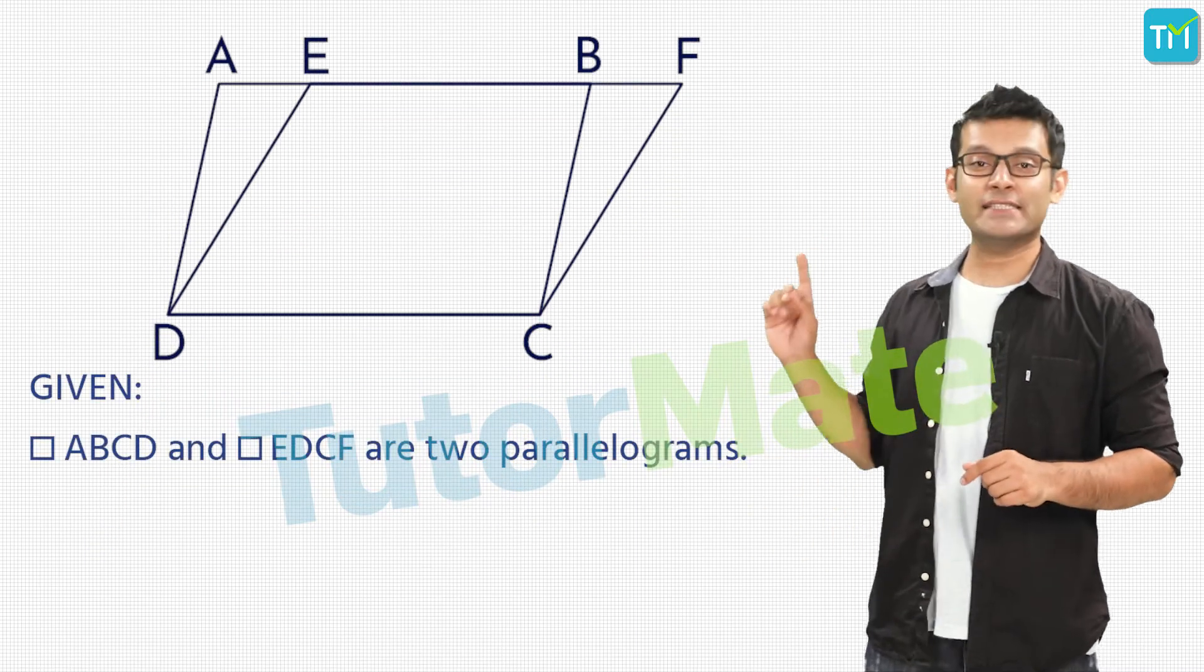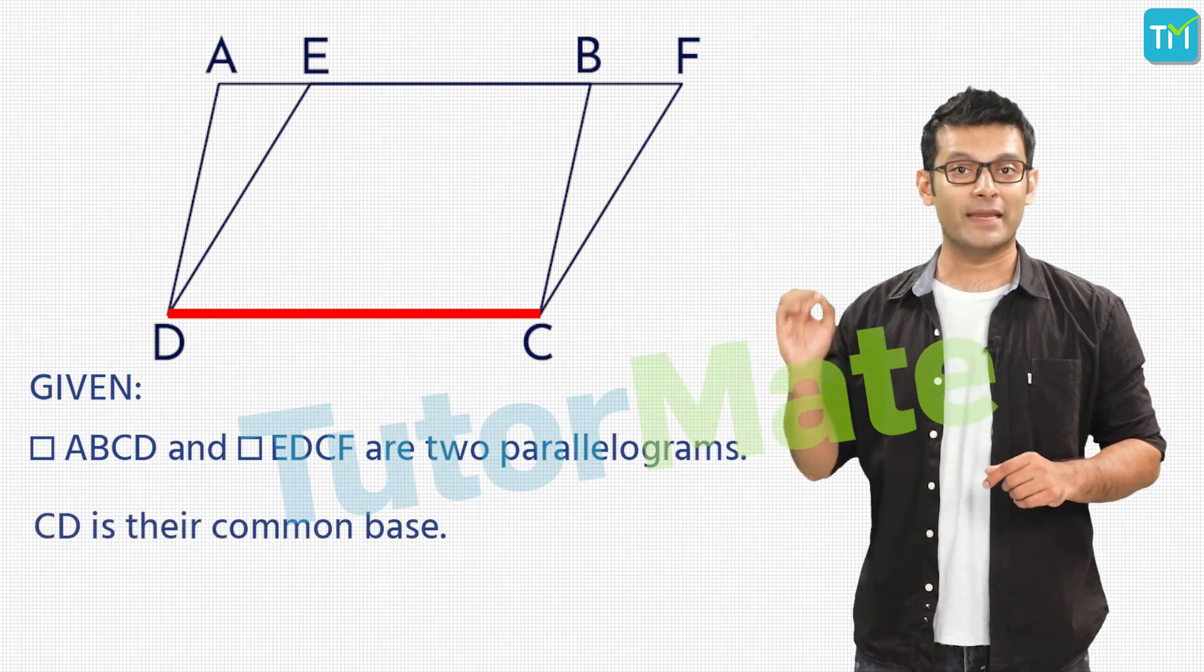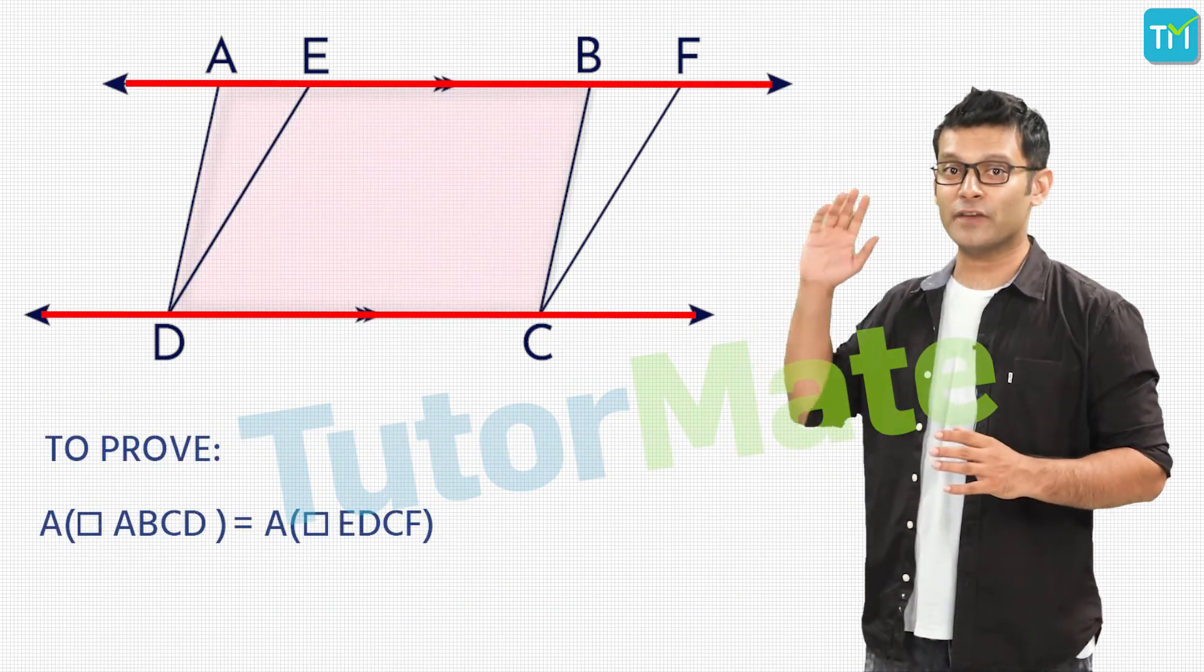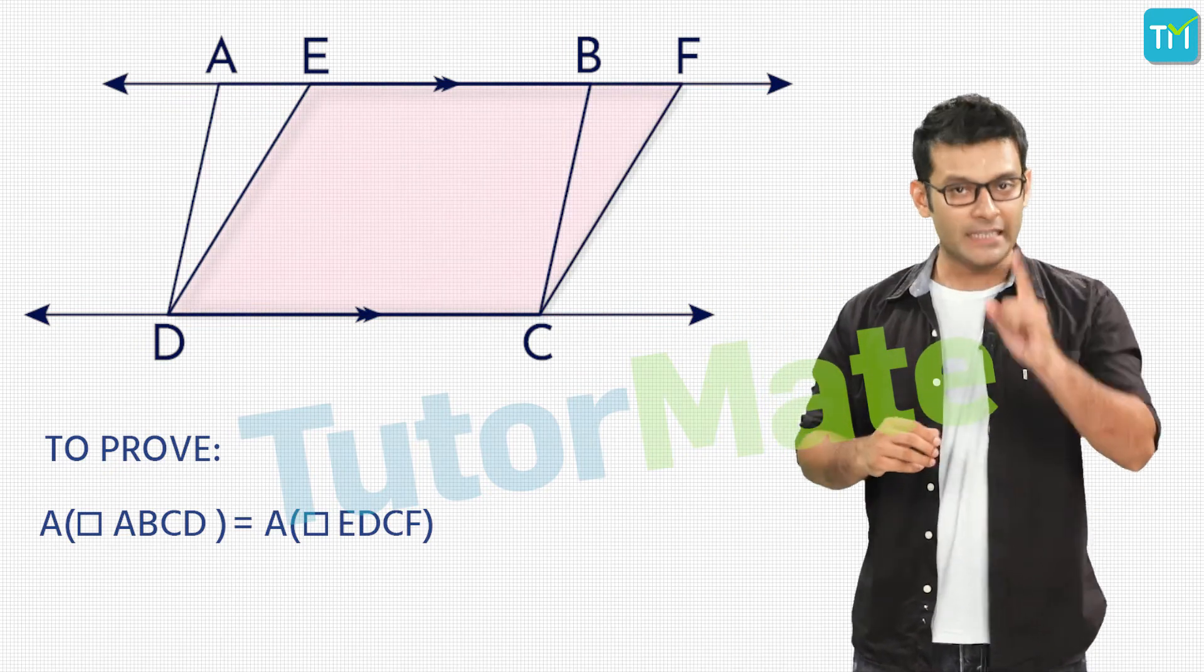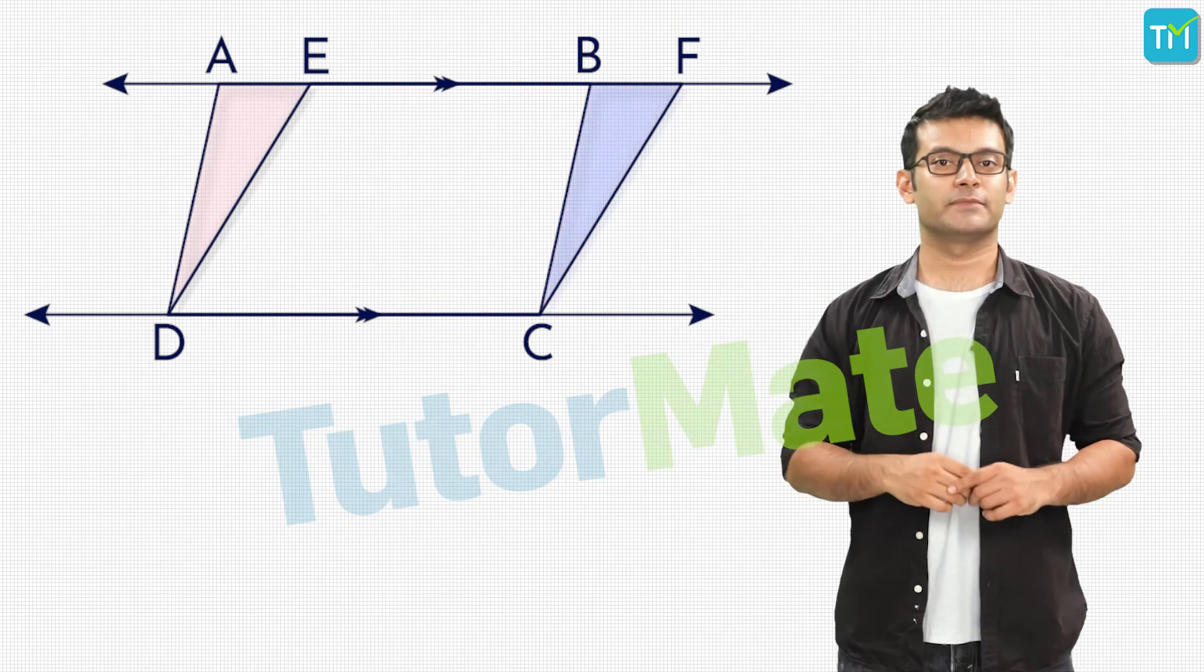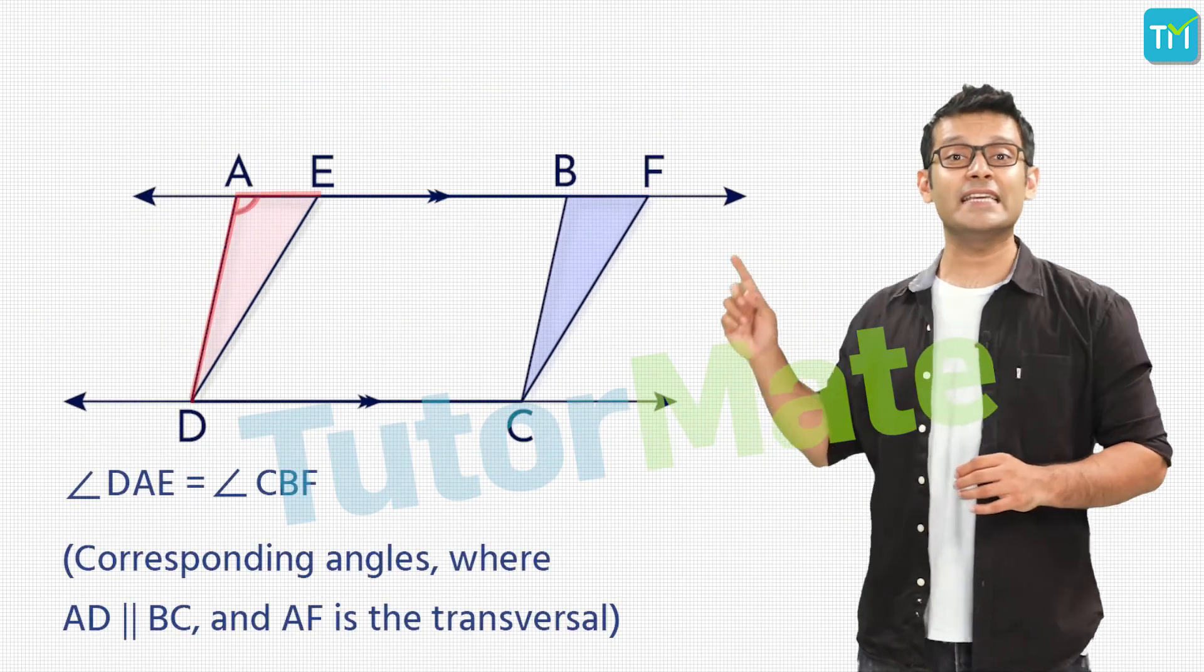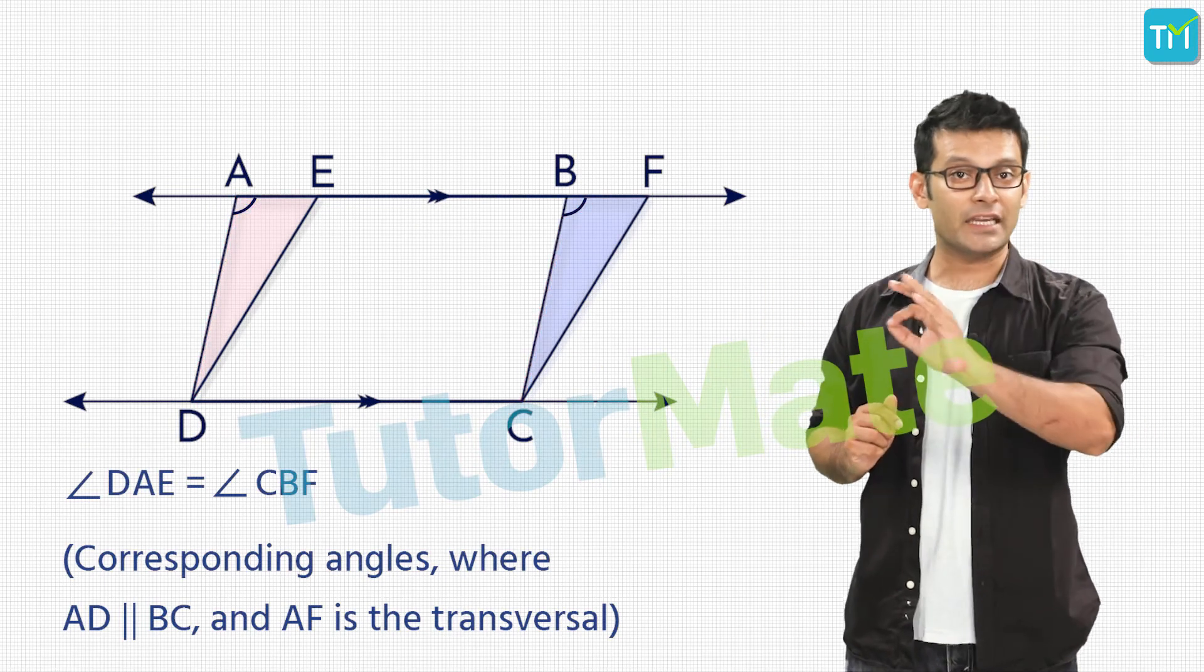So let ABCD and EDCF be two parallelograms with a common base CD and lying between the parallel lines AF and DC. We have to prove that the area of ABCD is equal to the area of EDCF. Now let's consider the two triangles ADE and BCF. Since AD is parallel to BC and AF is the transversal we have angle DAE and angle CBF as corresponding angles which means that they are equal.